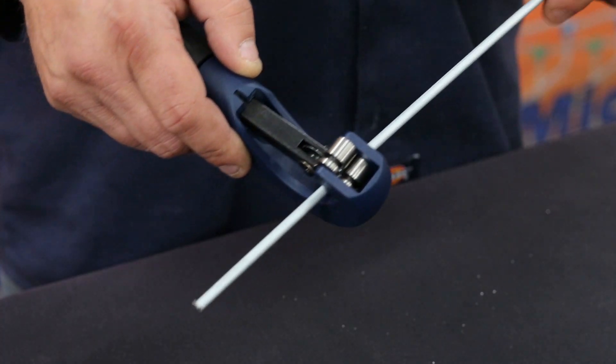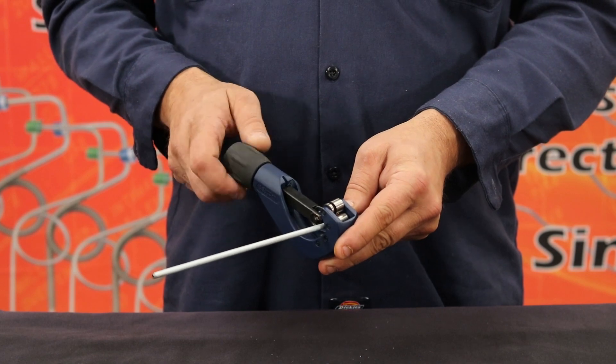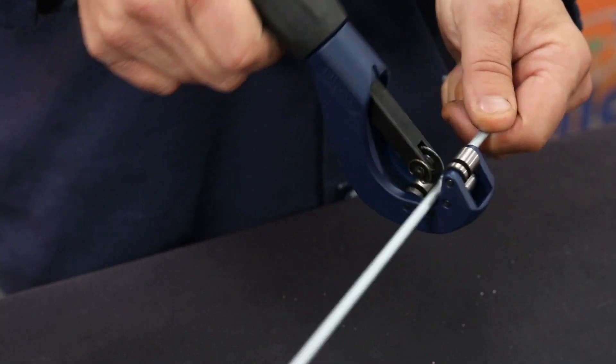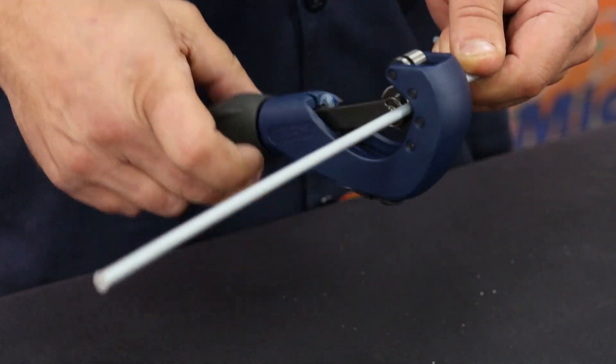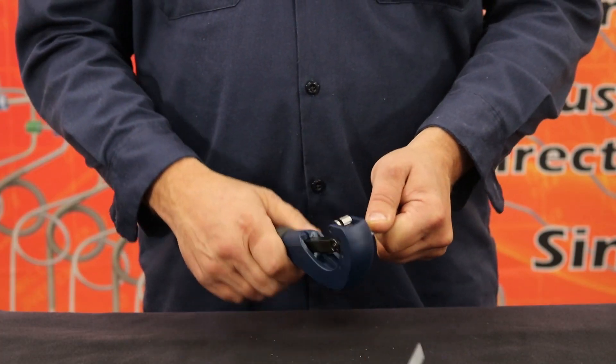The first step in prepping the tube is to cut the tubing using a tube cutter. The tube cutter wheel will create a clean cut. As you rotate the cutter around the tubing, turn the handle an eighth to a quarter turn at a time until the cut is complete.